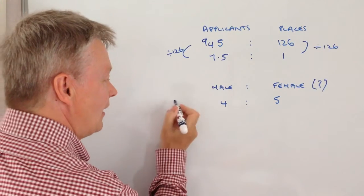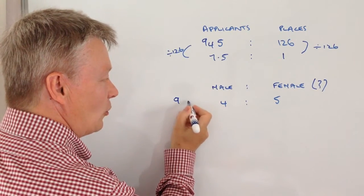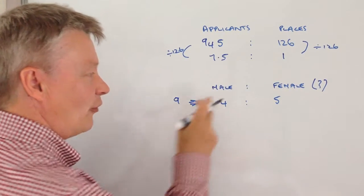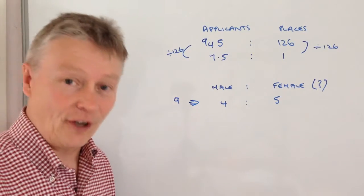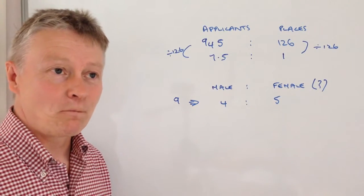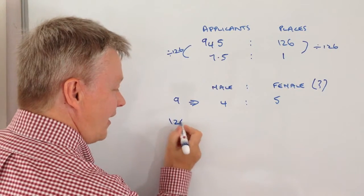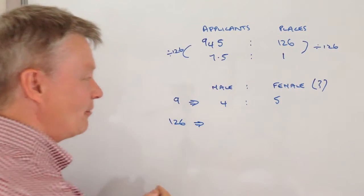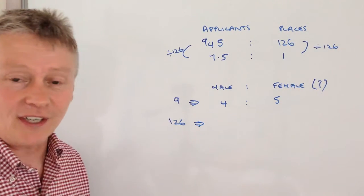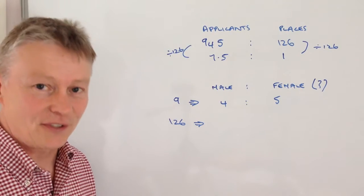What we're actually saying is if there are nine applicants altogether, then four of them would be male and five of them would be female. But there isn't nine, there's actually 126. So what we're saying is how much have we multiplied nine to get to 126?